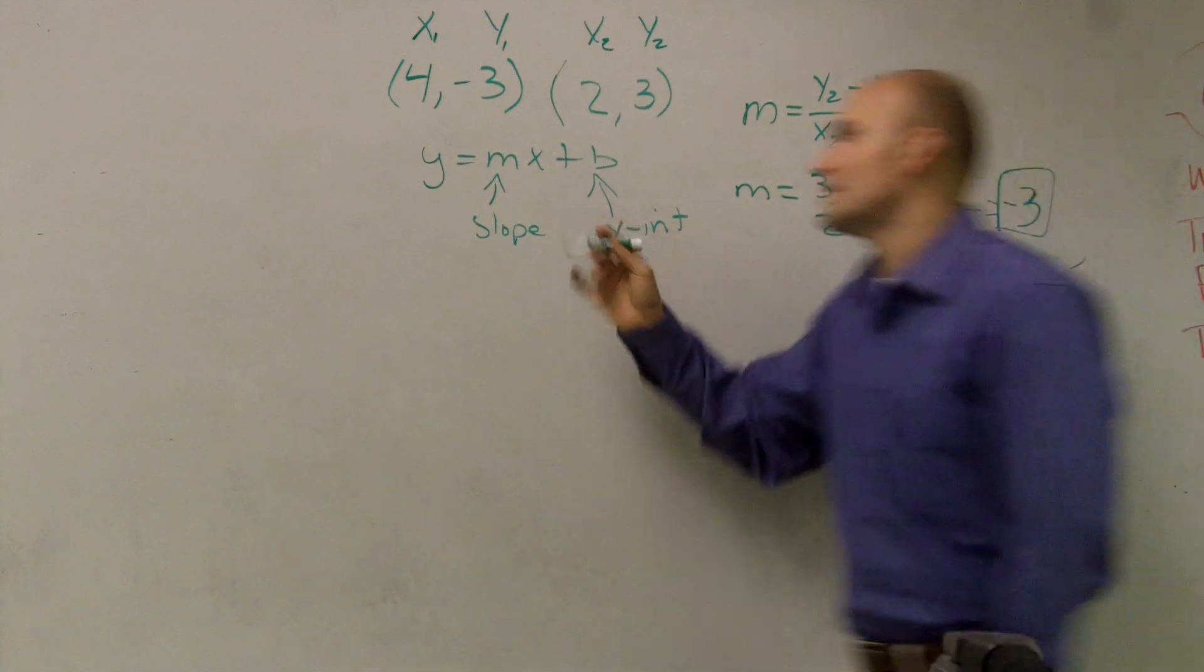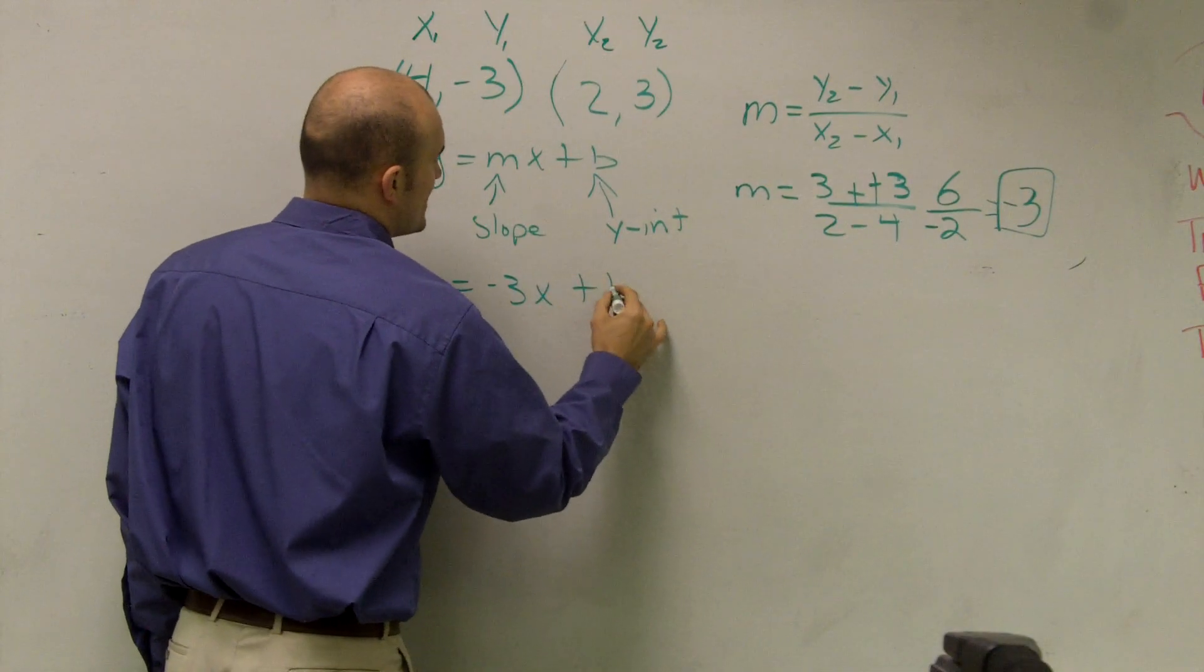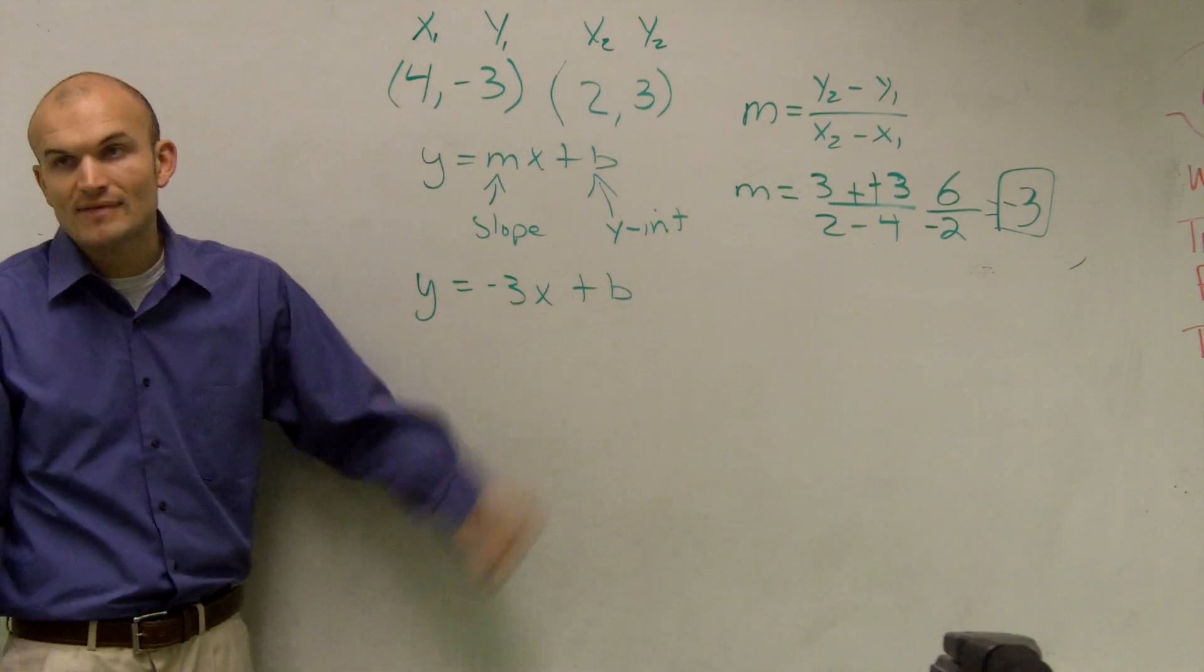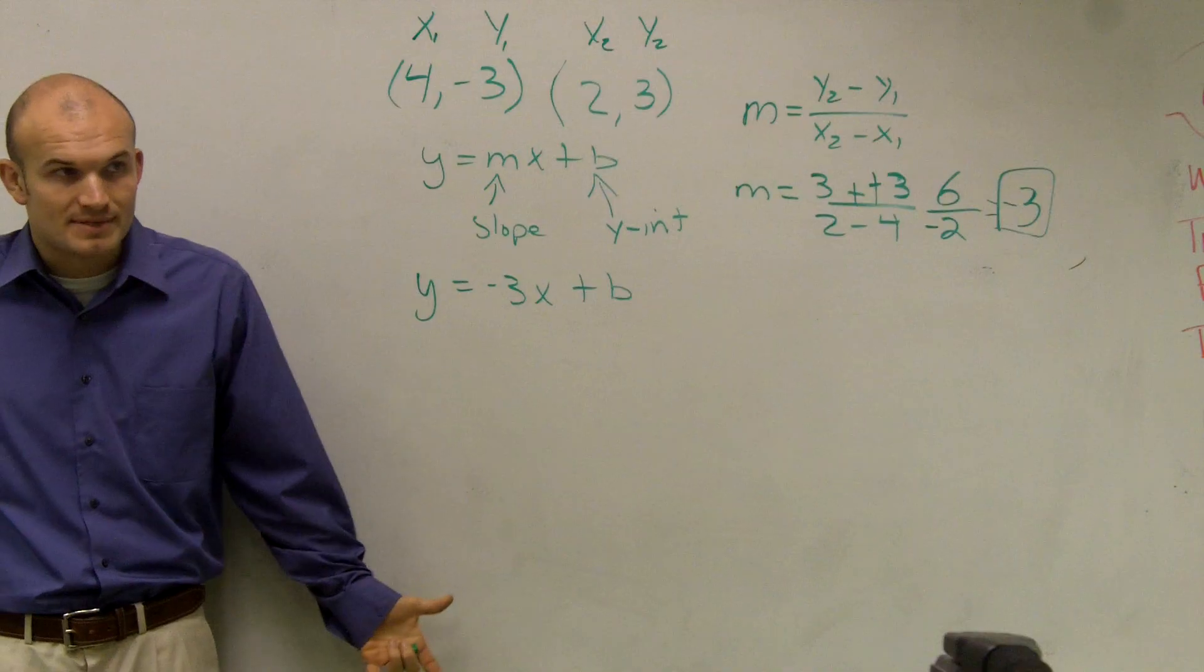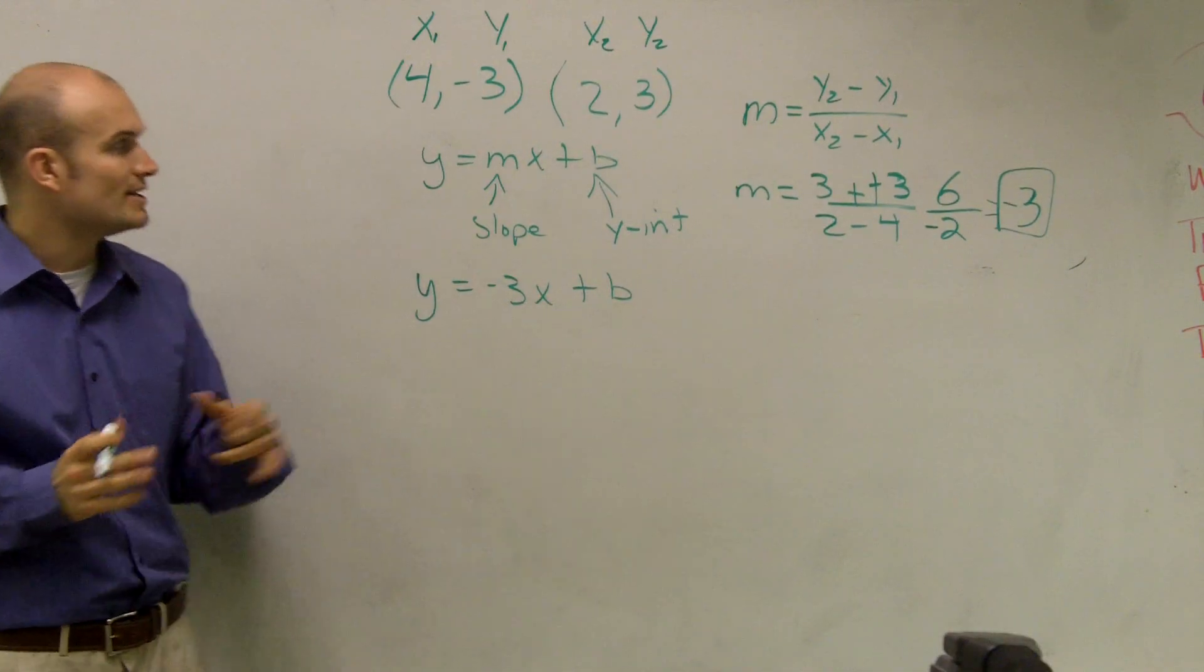Now I know my slope is negative 3. So I can write y equals negative 3x plus b. However, I still need to figure out the y-intercept. What is my y-intercept?